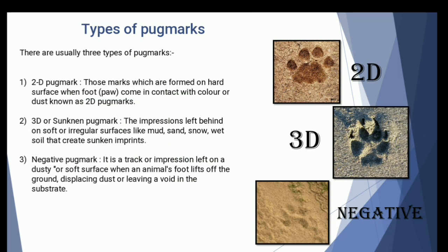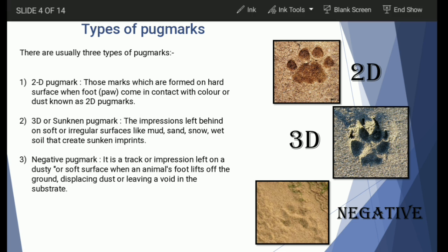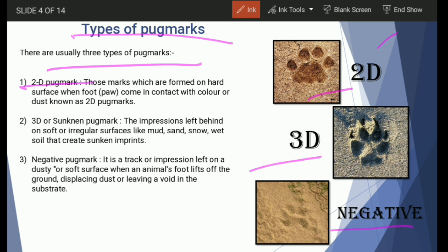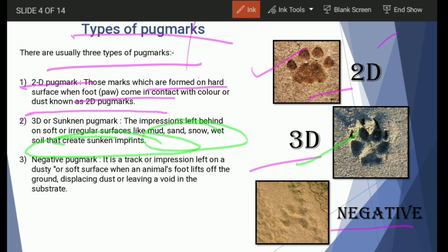Pug marks are classified into three types: 2D pug mark, 3D pug mark, and negative pug mark. A 2D pug mark is most commonly found when the foot of an animal comes in contact with paint or dust particles and that impression is left on another surface. A 3D pug mark, commonly termed a sunken pug mark, is the impression left behind on a soft or irregular surface such as mud, snow, or soil.